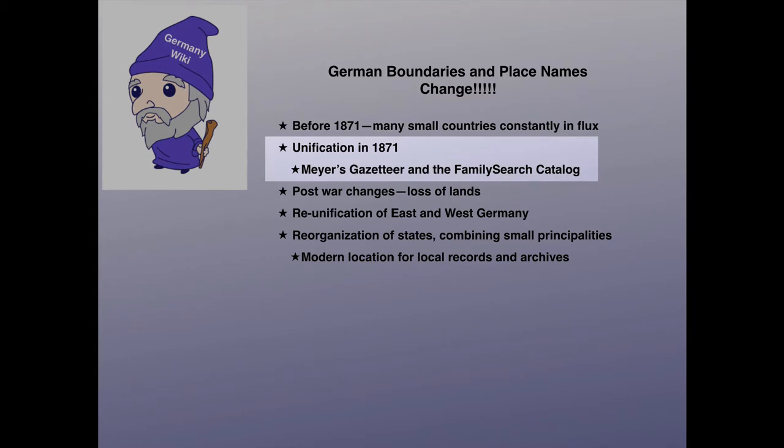The towns in Germany at that time are found in the 1871 Meyers Gazetteer. All the records in the FamilySearch system are found by the name of the town and its province in the 1871 Meyers Gazetteer.